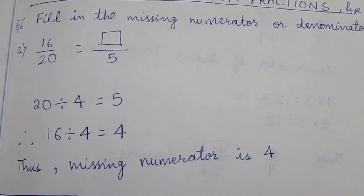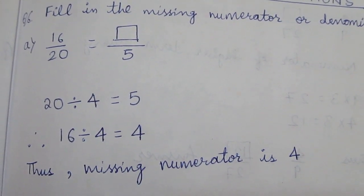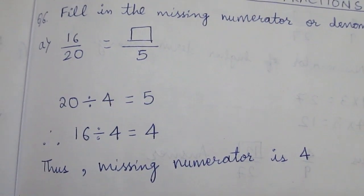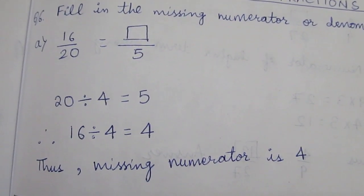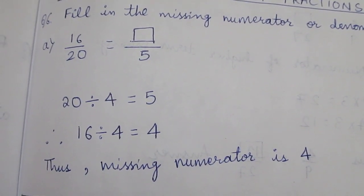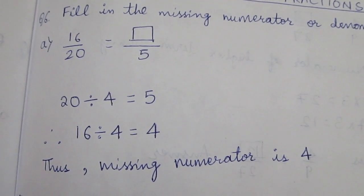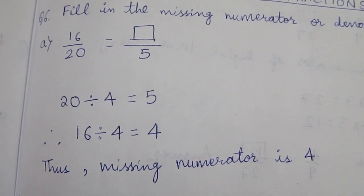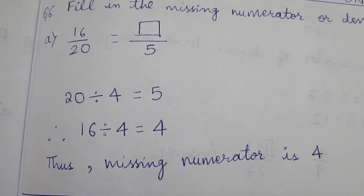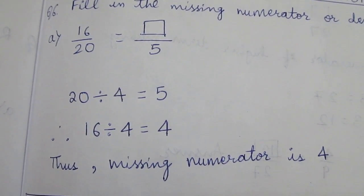First question: 16/20 = ?/5. Here, the numerator of lower term is missing. Therefore we will take the denominator: 20 divided by 4 gives 5, because 20 is greater than 5.